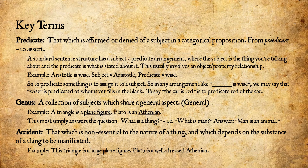We have affirmed that Aristotle is wise — we predicated 'wise' of Aristotle. To predicate something is to assign it to a subject. In an arrangement like 'blank is wise,' we say that 'wise' is predicated of whoever fills in the blank. To say 'the car is red' is to predicate 'red' of the car.